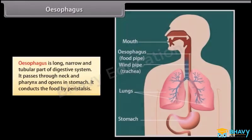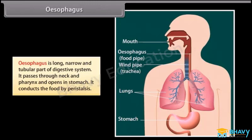Pharynx is a funnel-shaped part where the food and air passage cross each other. It has two apertures: Glottis, which leads into the voice box and windpipe, and Gullet, which leads into the esophagus and opens during swallowing of food. Esophagus is a long, narrow and tubular part of the digestive system. It passes through the neck and thorax and opens into the stomach. It conducts the food by peristalsis.